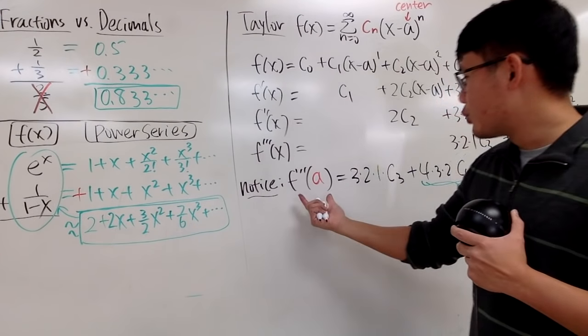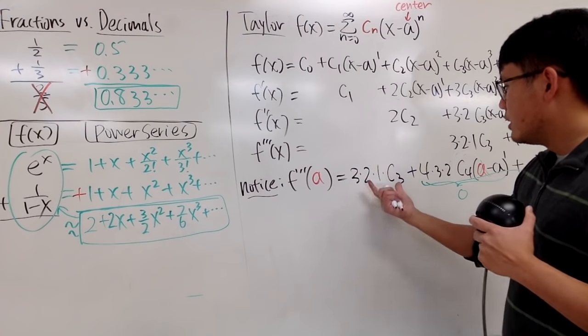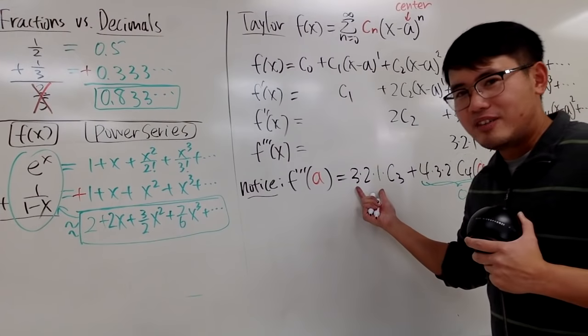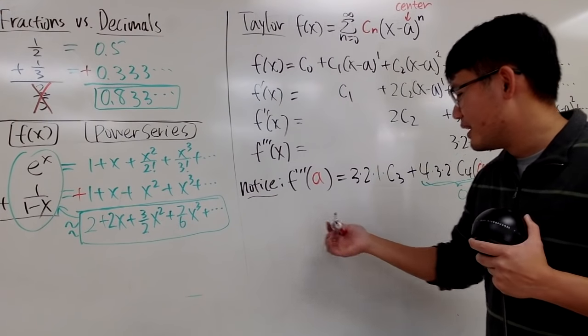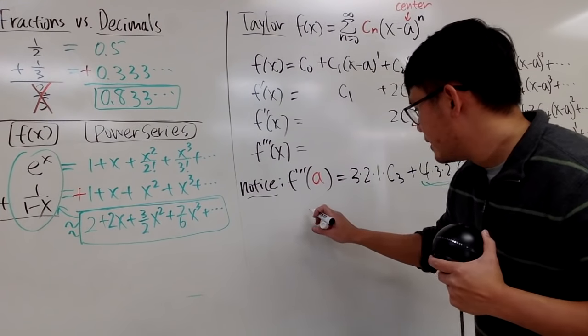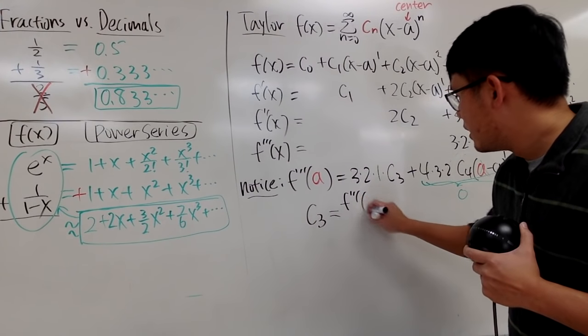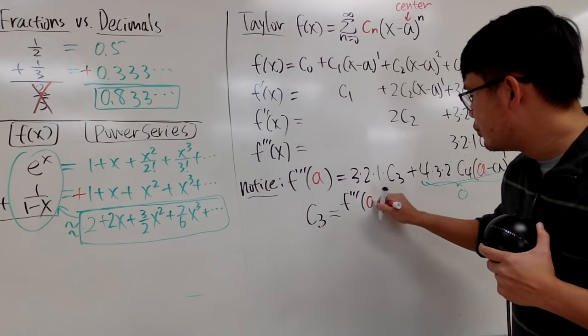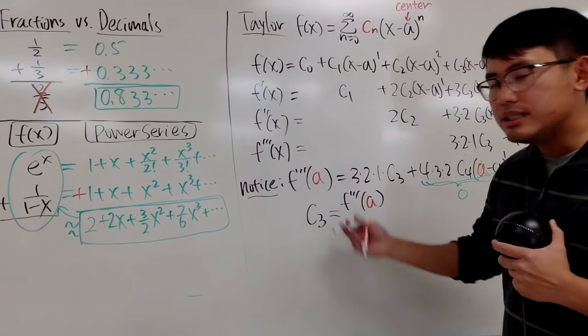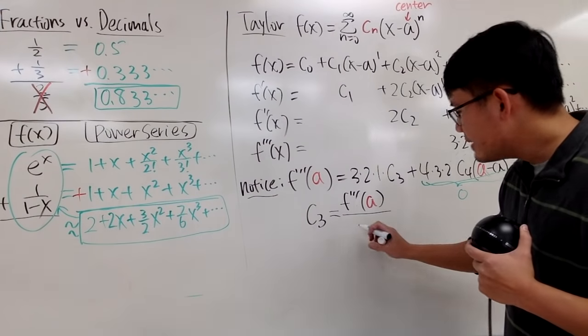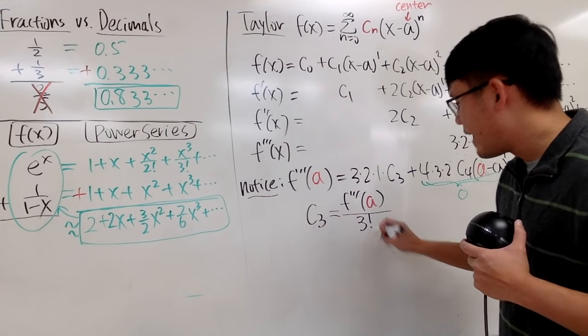So if you look at the third derivative of a, it's just this. So how can we solve for c3? We can just divide it by 3 times 2 times 1 here. So in another word, note, c3 is just the third derivative of the function, and you have to put a into it, and then divide it by 3 times 2 times 1. We can nicely write it as 3 factorial.